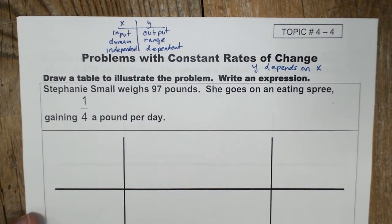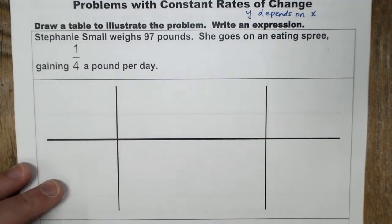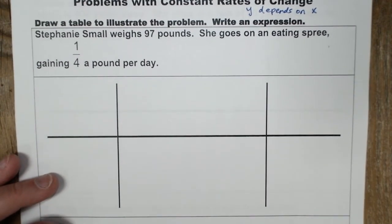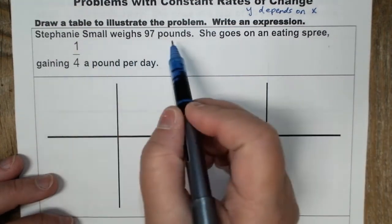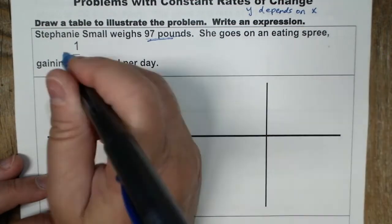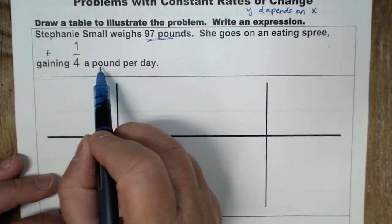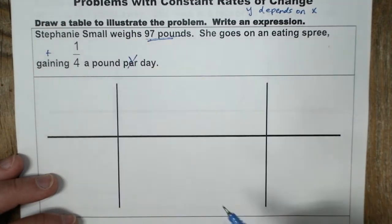So we're going through this and do some problems. It says draw a table to illustrate the problem, write an expression. You have been doing this for a while. Now we're going to do it in algebra terms. No big deal. So Stephanie Small weighs 97 pounds. She goes on an eating spree gaining, which is add one fourth, a pound per day. That is not scratching it out. That is putting my variable.